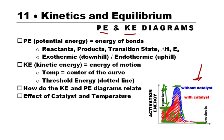Now some of these things are uphill and some are downhill. Here we're talking about starting from the reactants, going to the products — that's downhill. So that's an exothermic reaction. If we started and went uphill, that would be an endothermic reaction.